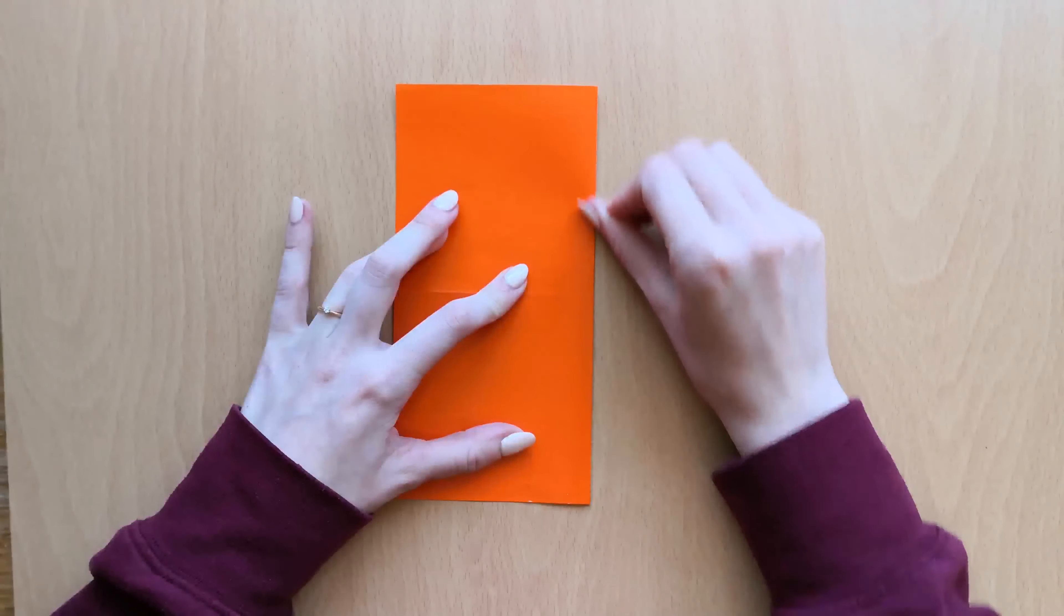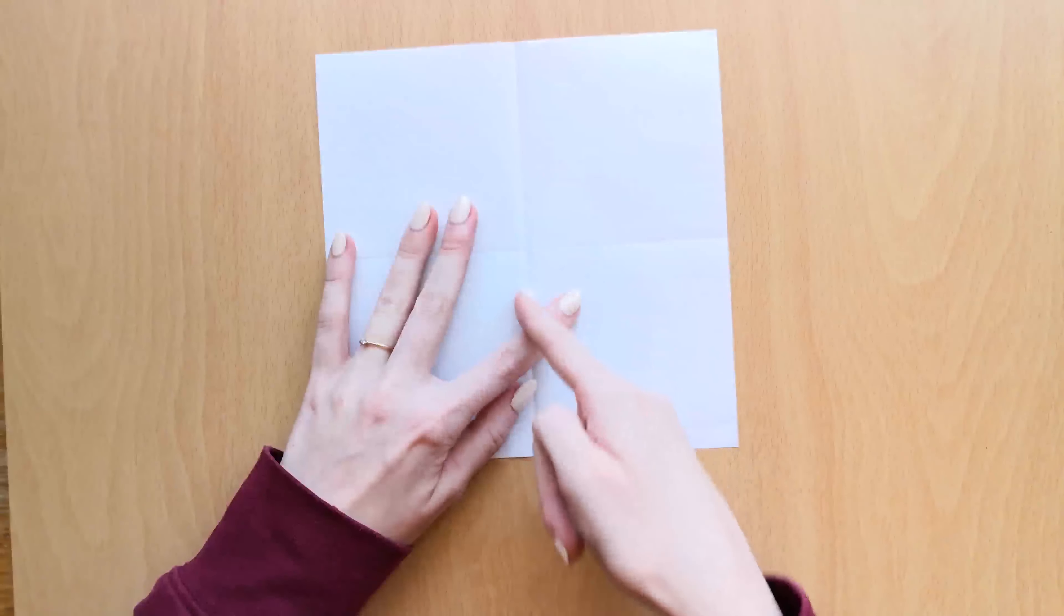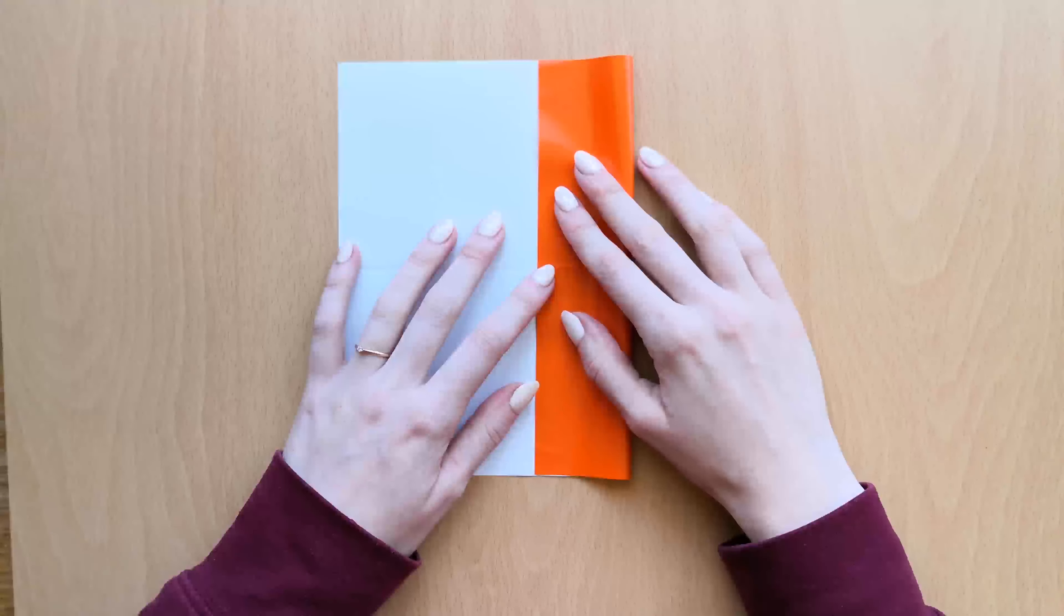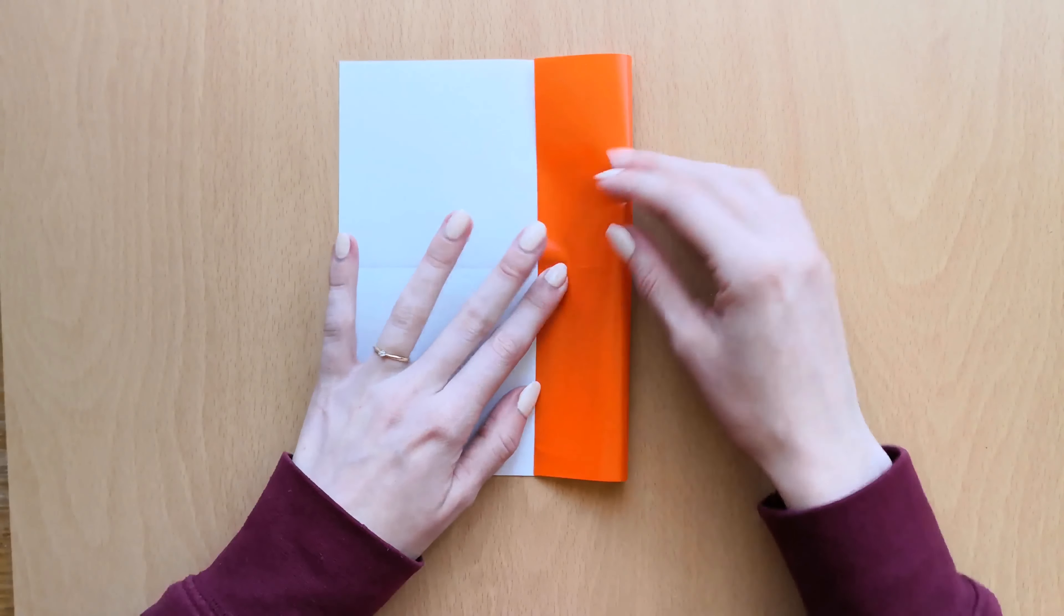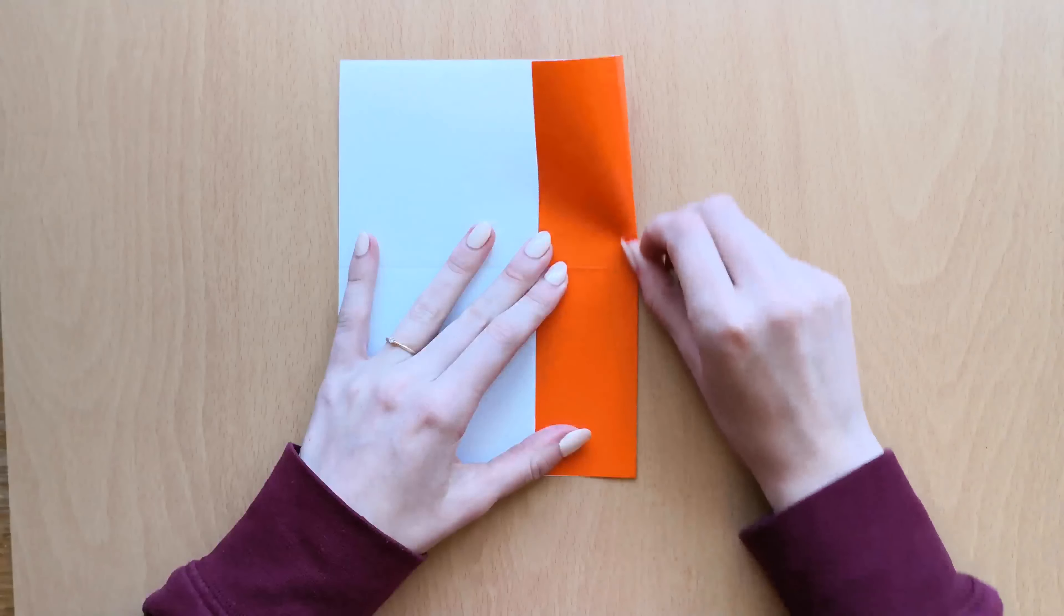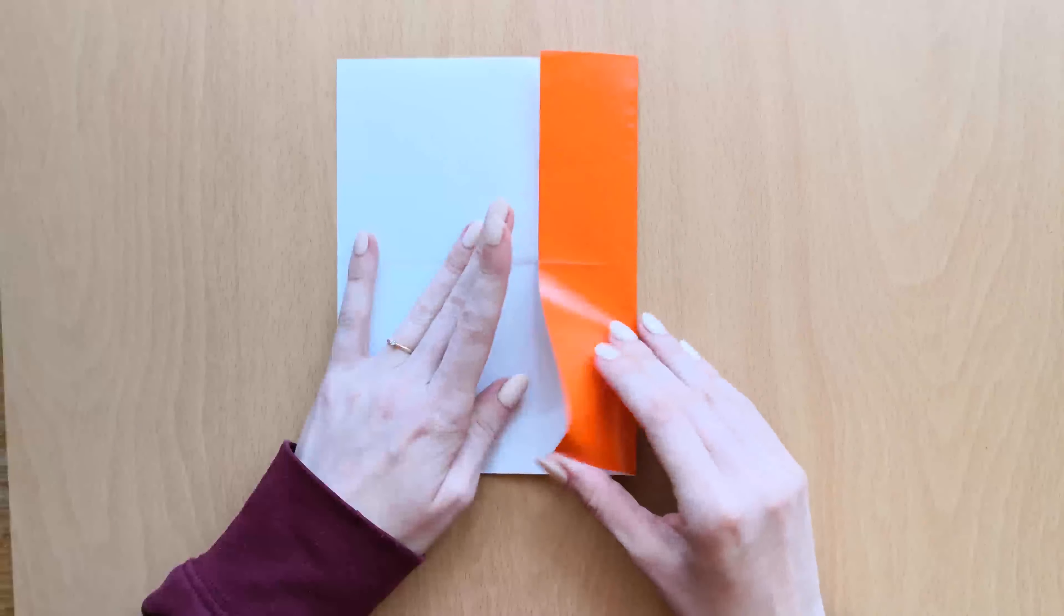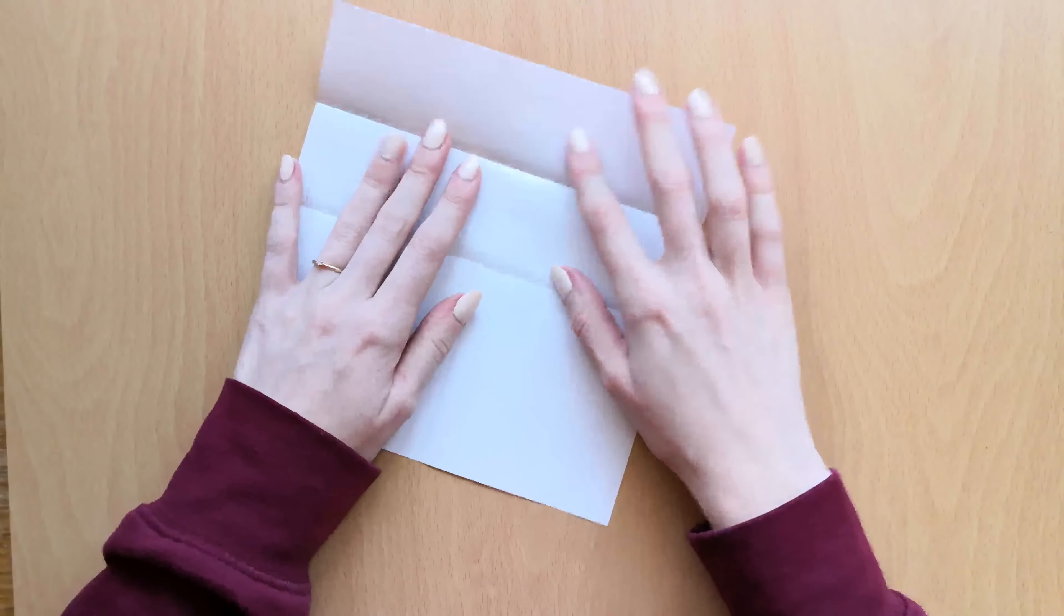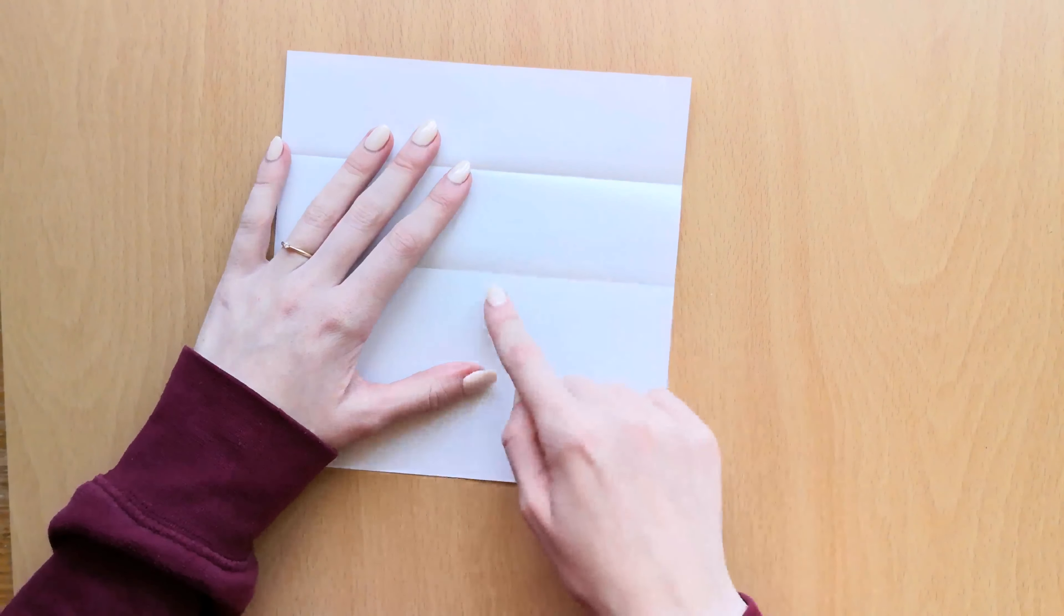In the next step we'll bring this side, so this line, into the middle and fold it. And then we'll do the same with this line. So we'll fold it into the middle.